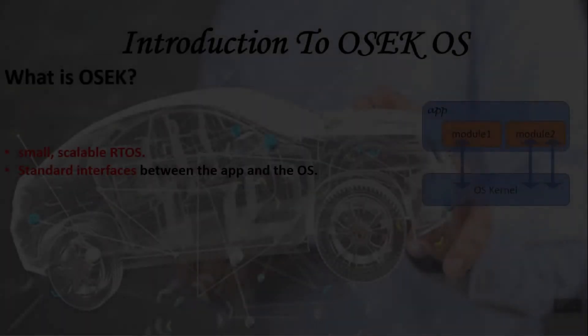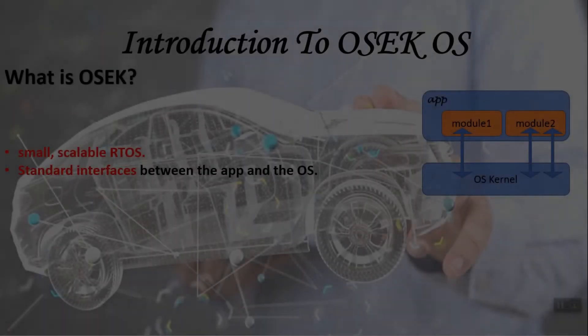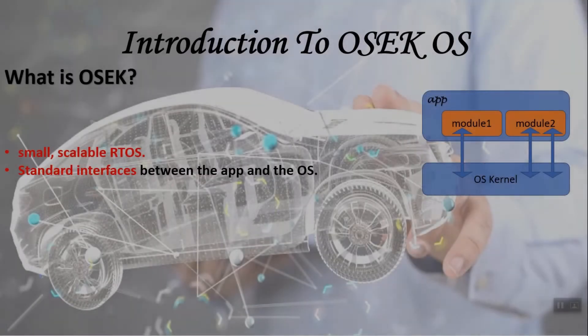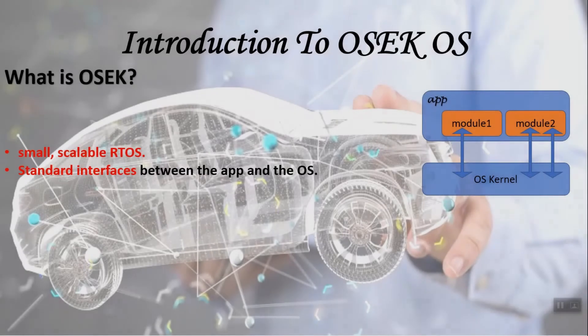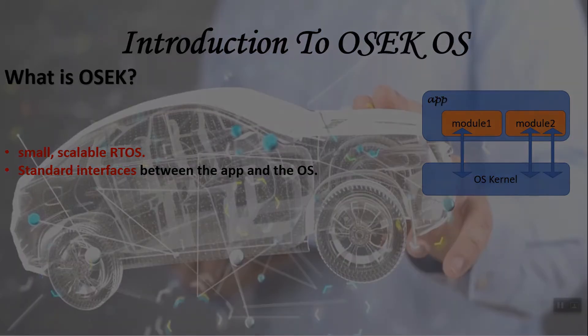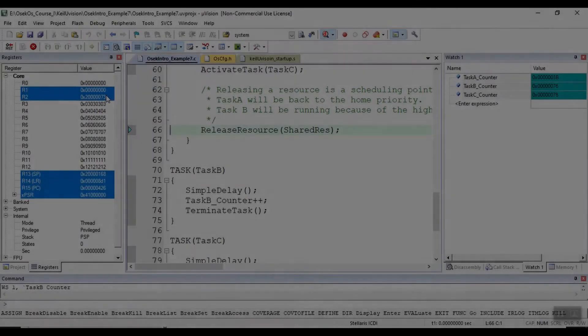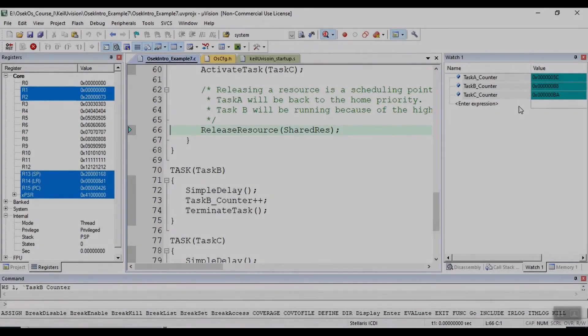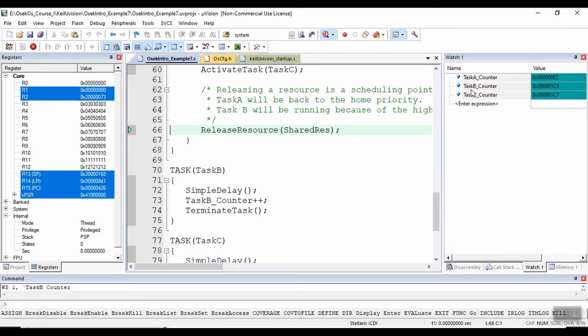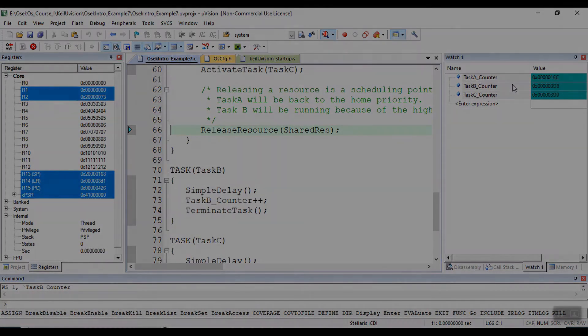This defines the interfaces between the application software components and the real-time kernel, without specifying the internal details of each interface or service. You will see the counter of tasks B and C will be twice the counter of task A.